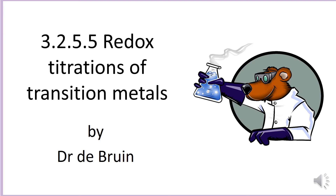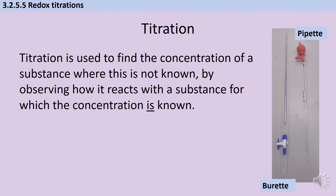This video is part of a series about the AQA A-level chemistry topic of transition metals. It follows on from a more general video about variable oxidation states and looks at redox titrations using transition metals. Titration is a technique used to find out the unknown concentration of a substance by reacting it with a second substance of known concentration, and seeing what volume is required to reach the end point.